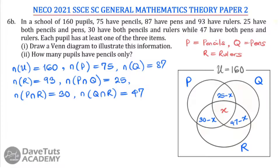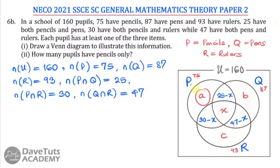We are not given information about those that have pencils only, pens only, or rulers only. So I will call those regions A for pencils only, B for pens only, and C for rulers only. We are given P itself to be 75, Q to be 87, and R to be 93. A represents pupils who only have pencils — they don't have rulers and they don't have pens.